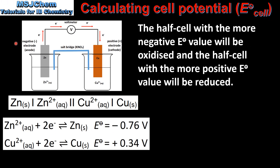Let's look at an example. Here we have a Voltaic cell which is composed of a Zinc half cell and a Copper half cell. Below the diagram we have the shorthand notation for the Voltaic cell and we also have the values for the standard reduction potentials of the Zinc half cell and the Copper half cell. Using these values we can deduce which half cell will undergo oxidation and which half cell will undergo reduction.